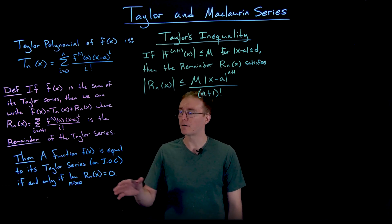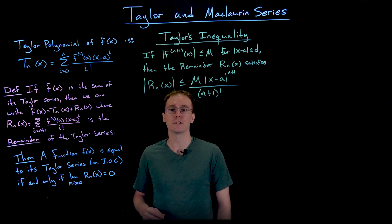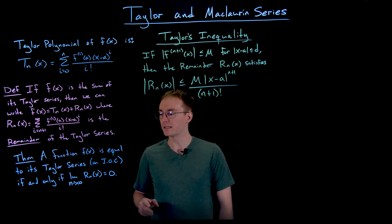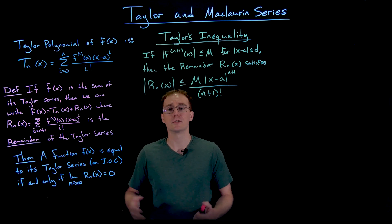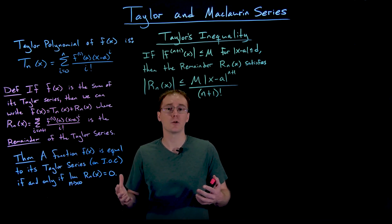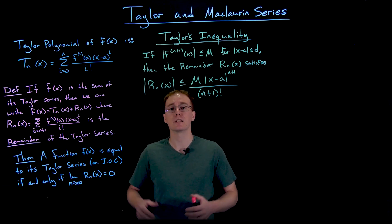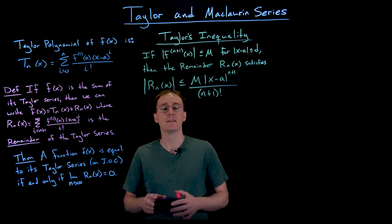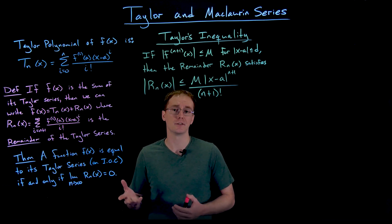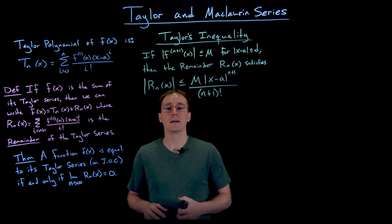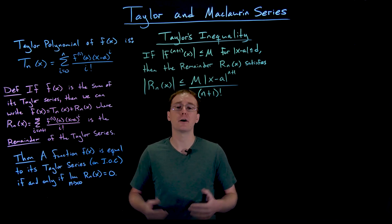This theorem says that if our function f(x) is actually equal to its Taylor series on the interval of convergence, if and only if the limit as n approaches infinity of the remainder goes to zero. In other words, if we keep using our Taylor polynomial and let n go to infinity, the remainder — the error — gets smaller and smaller and goes to zero. The remainder is our way of gauging the error in using a Taylor polynomial approximation.